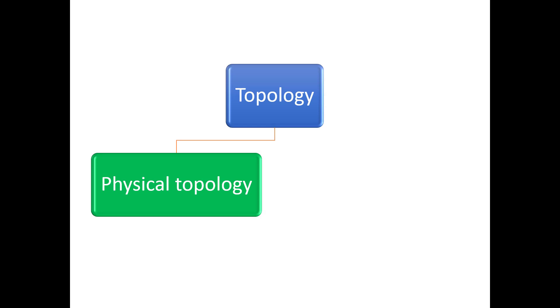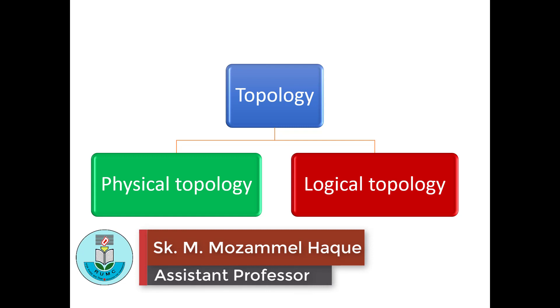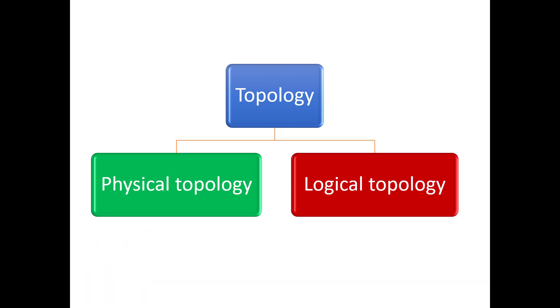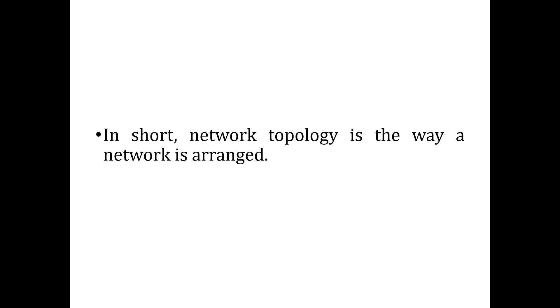There are two approaches of topology: physical topology and logical topology. Physical topology refers to the physical connections and interconnections between nodes and the network, such as wires, cables, and so forth. Whereas logical topology is a higher-level idea of how the network is set up and illustrates how data flows within a network. Here I shall discuss physical topology only. In short, network topology is the way a network is arranged, and its arrangement can make or break network functionality, connectivity, and protection from downtime.